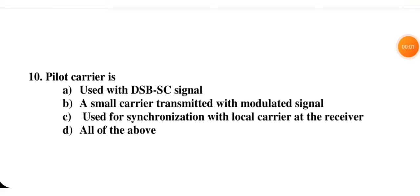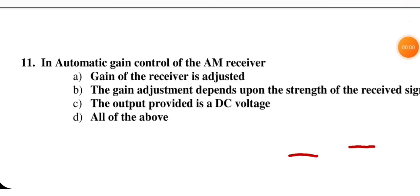Next question: pilot carrier is used with DSB as — the signal, a small carrier transmitted with the modulated signal, used for synchronization with local carrier at the receiver, or all of the above. For pilot carrier, all of the above is correct, meaning D is the right option.